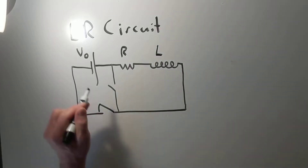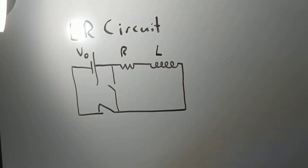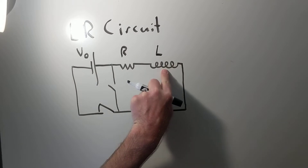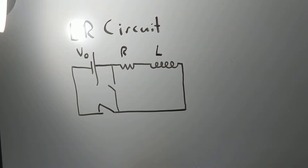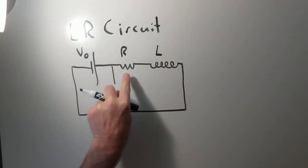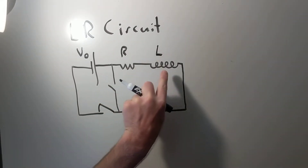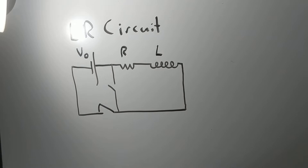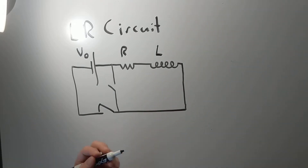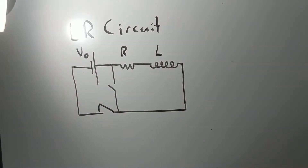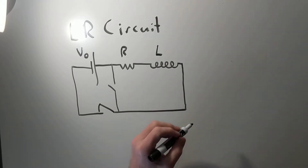But then after a while, the change becomes less and less. And then after a while, this just behaves like a wire. So if you remember back to the RC circuit — resistor capacitor — this is in a sense the opposite of that. Because when we first did an RC circuit, the capacitor behaved like a wire, and then after a while it blocked all the current. But in this, initially it blocks the current, and then after a while it lets the current go through.